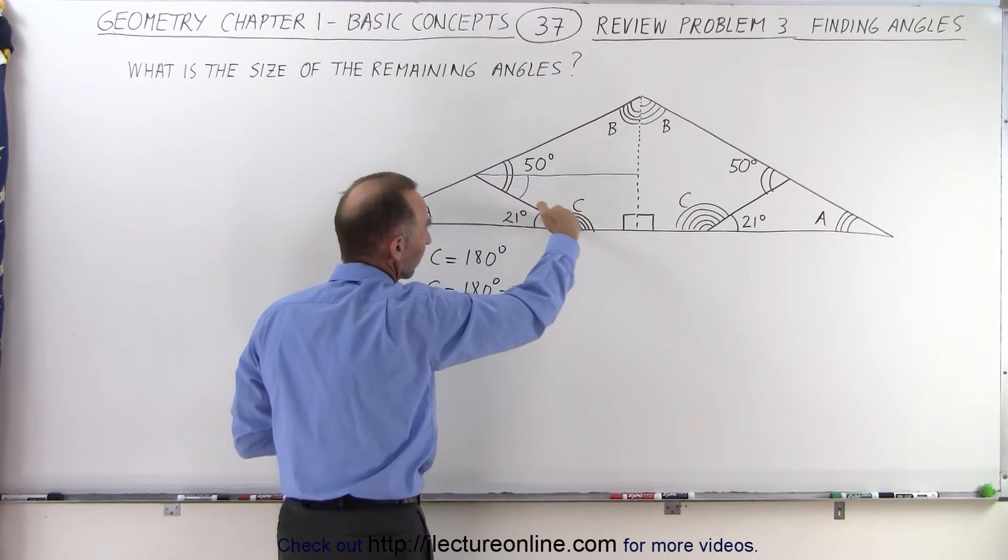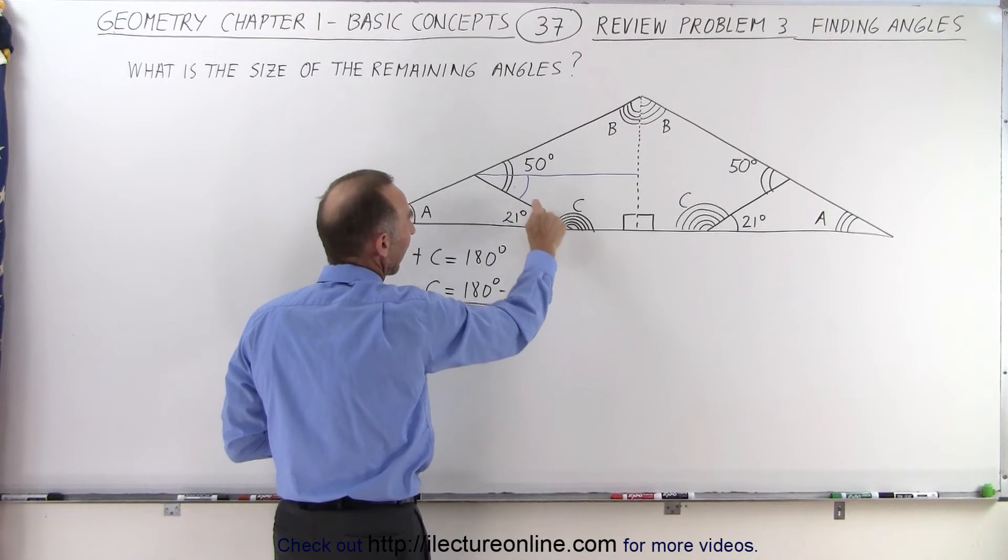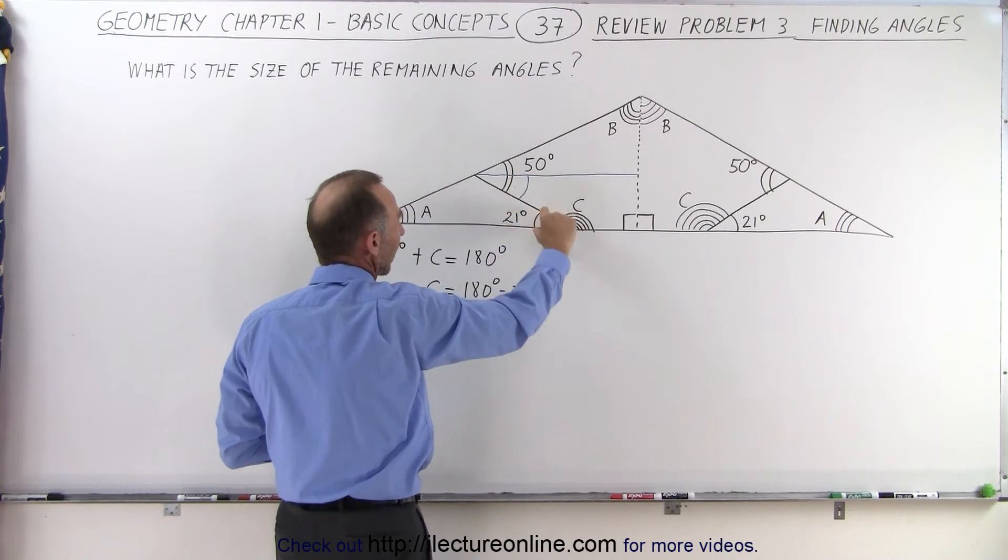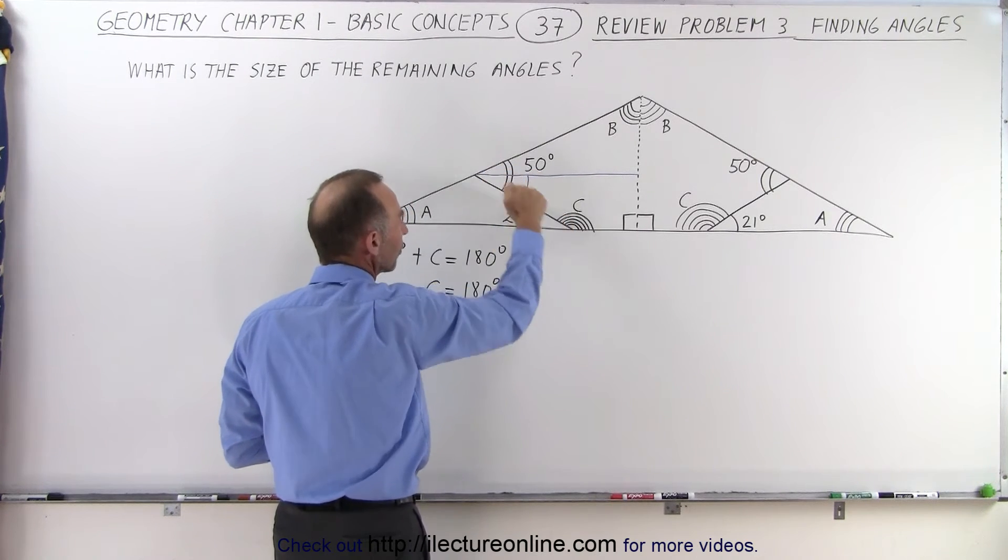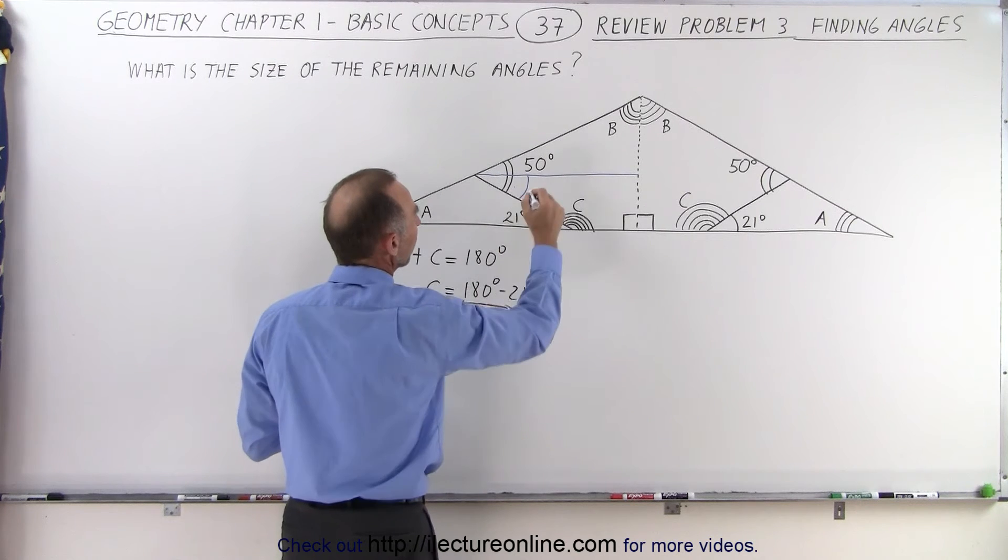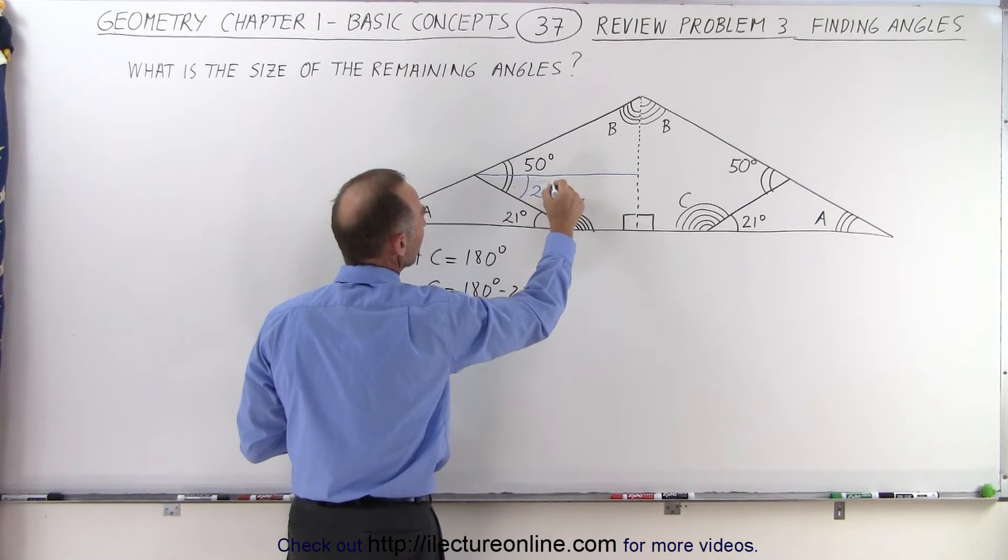We cut the parallel lines by a single line here, which means that this angle and this angle, which are the two small angles that are what they call alternate interior angles, must be equal, which means that this must be a 21 degree angle.